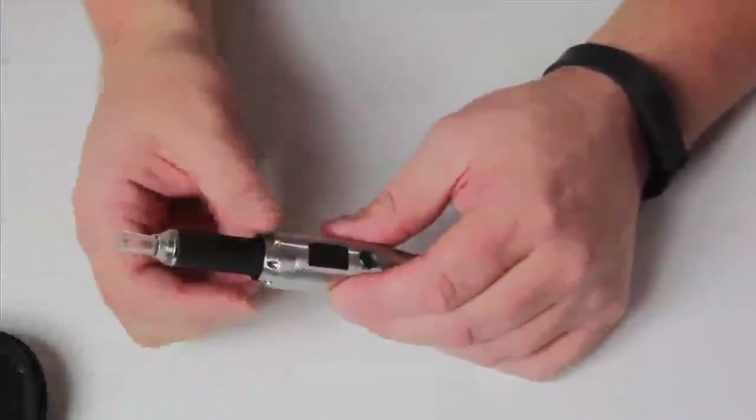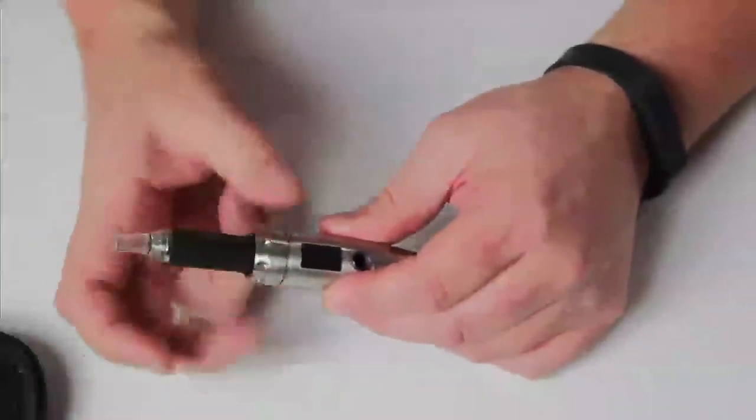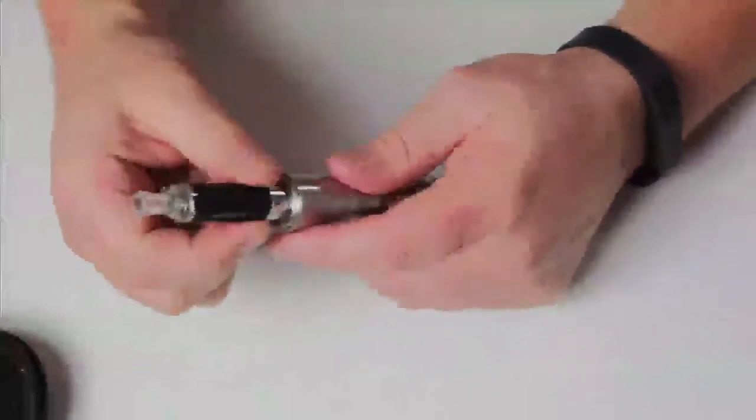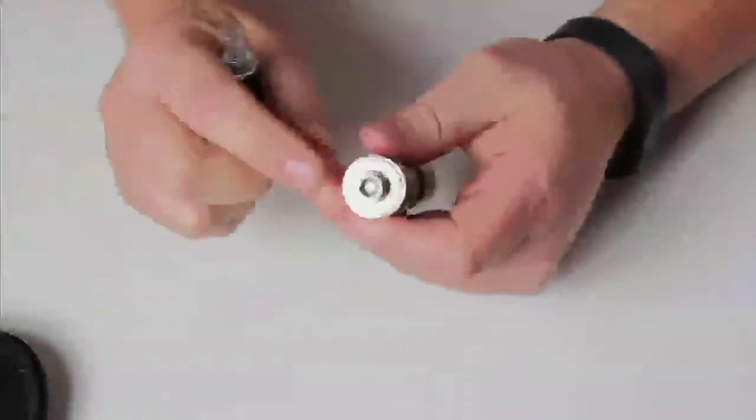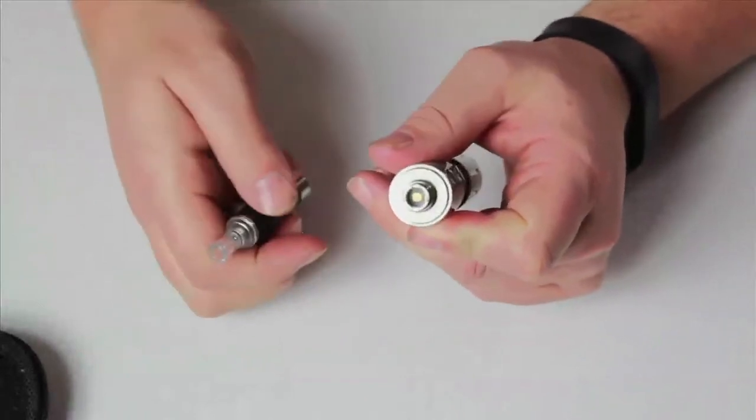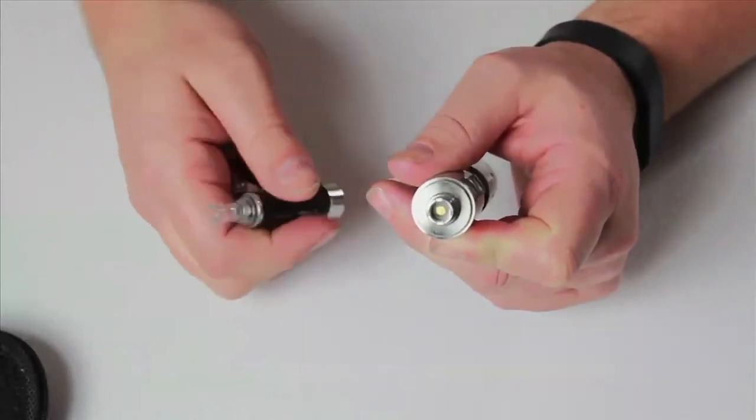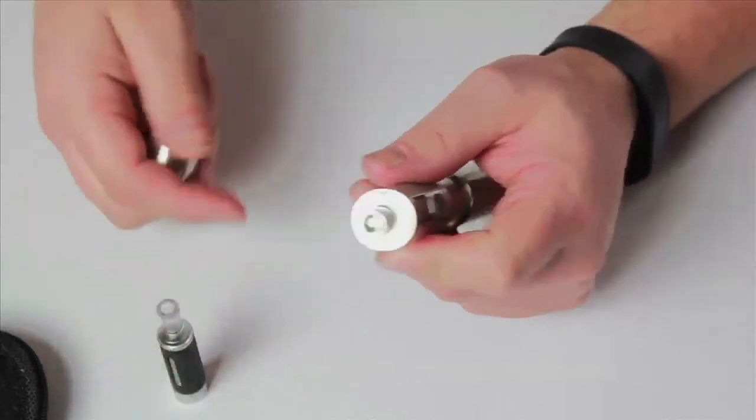If you screw that on too tight, it can make it a little hard to get that off, even with this coming off. And you also don't want to screw it on too tight because you can push the pin inside there down, and potentially mess up the electronics, which is the same on any battery.